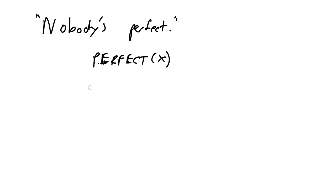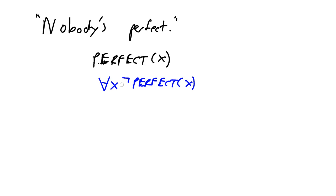So how would you express "nobody's perfect"? There are several different ways—many different answers for all these. Here's one: for all X, it is not true that perfect(X). That's saying for every single being, that being is not perfect. If we're talking only about humans, we could throw in "human(X) implies not perfect(X)" to accommodate perfect beings that are non-human. But that is certainly a way to do it if we're only thinking about humans.